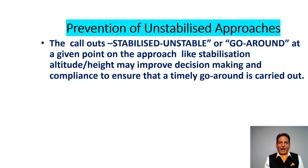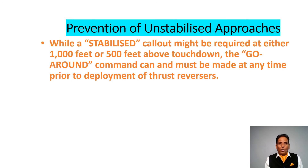The callouts 'stabilized,' 'unstable,' or 'go around' at a given point on the approach — such as stabilization altitude or height — may improve decision-making and compliance, to ensure that a timely go-around is carried out. A 'not stabilized' callout might be required at either 1,000 feet or 500 feet above the runway. The go-around command can and must be made at any time prior to the deployment of thrust reversers.